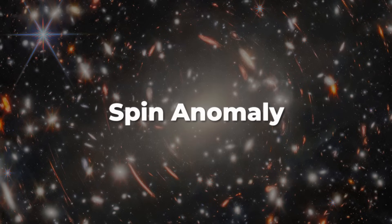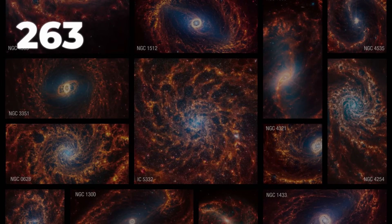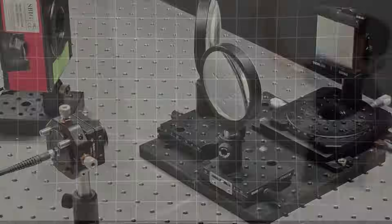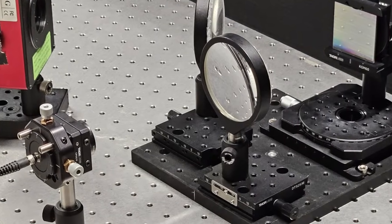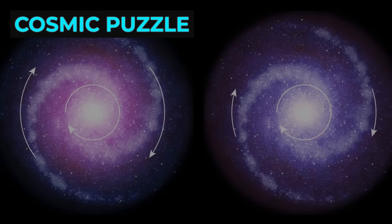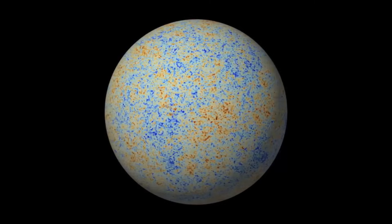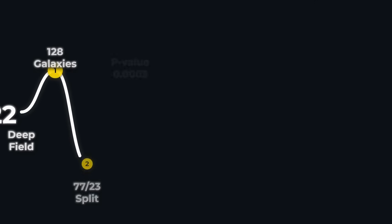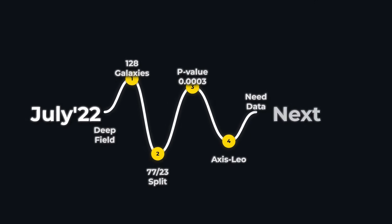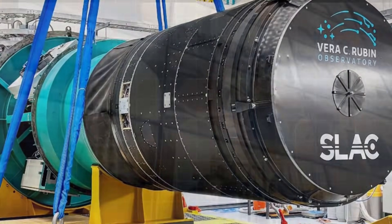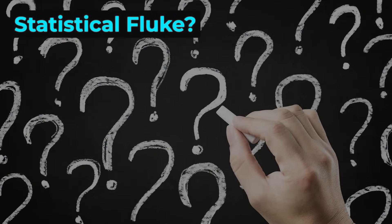But extraordinary claims demand extraordinary evidence. The JADE sample, while groundbreaking, is still small. Just 263 galaxies, all from a single survey field, is not enough to rewrite the laws of cosmology. Instrument quirks, sample selection, and human or algorithmic bias could all play a role. For now, the JWST spin survey stands as a puzzle. It challenges the assumption that the universe looks the same in every direction. It raises the possibility that our cosmic neighbourhood carries a memory from before the Big Bang, if and only if future surveys can confirm the effect. Until then, the debate continues. Is this a glimpse of new physics, or just a statistical fluke waiting to be explained?